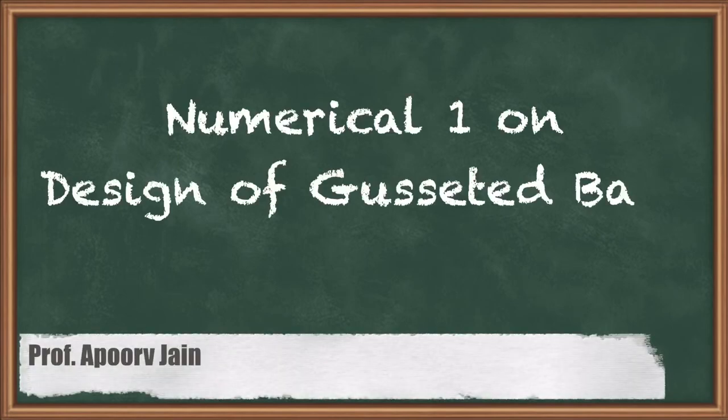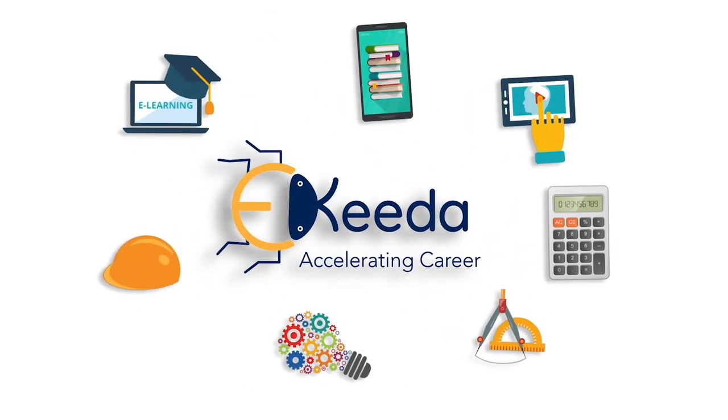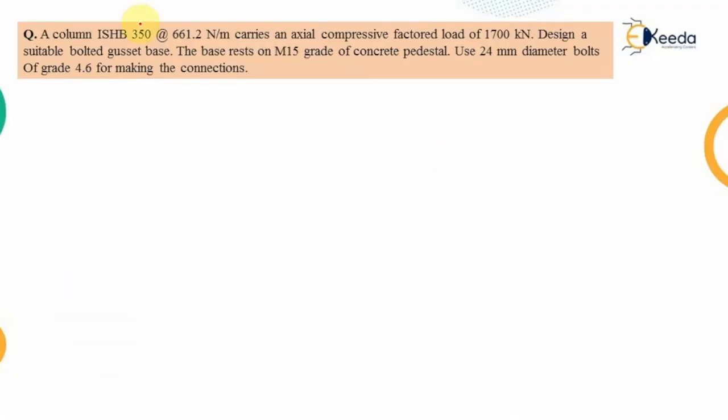In this video we are going to see a numerical on the design of the gusseted base. The problem states: a column of ISHB 350mm depth at 661.2 N/m carries an axial compressive factored load of 1700 kN. Design a suitable bolted gusset base. The base rests on M15 grade concrete pedestal.